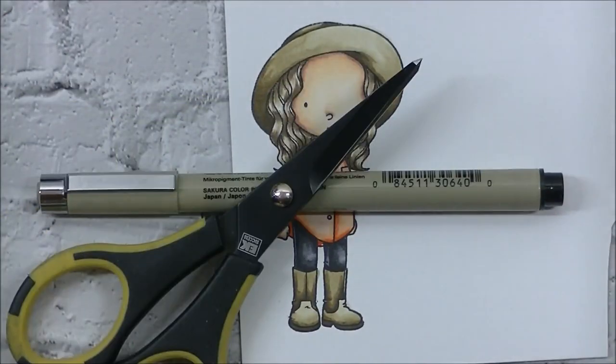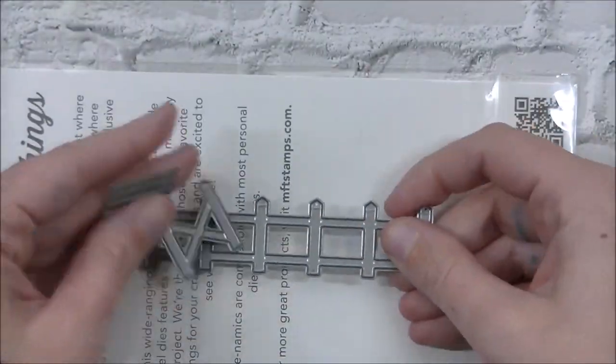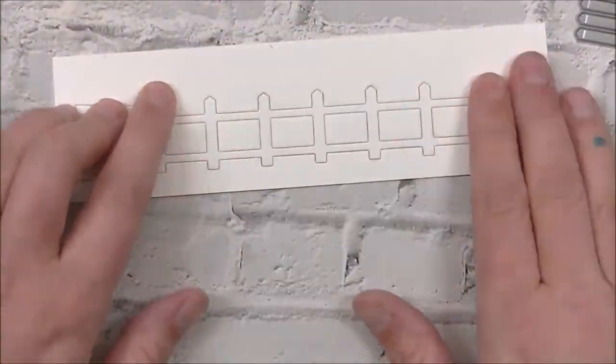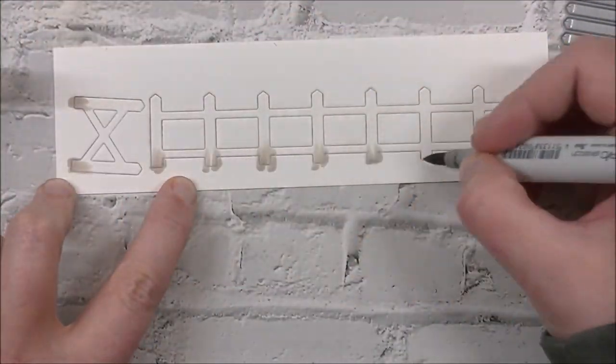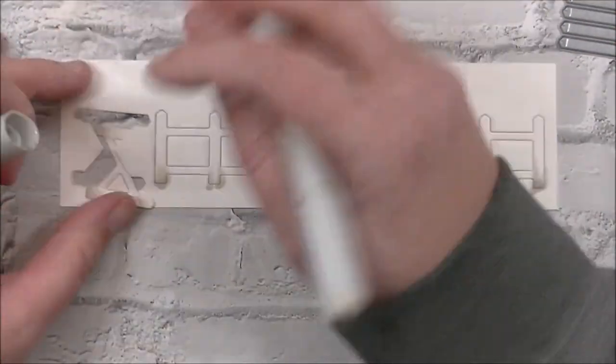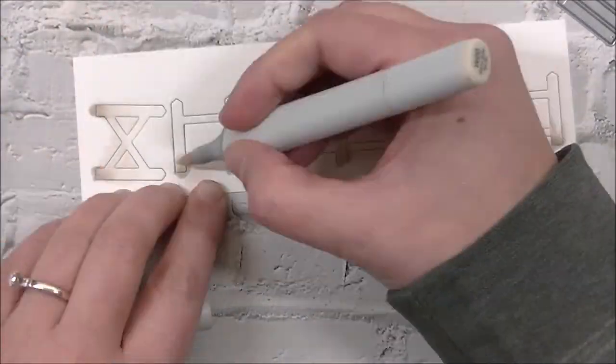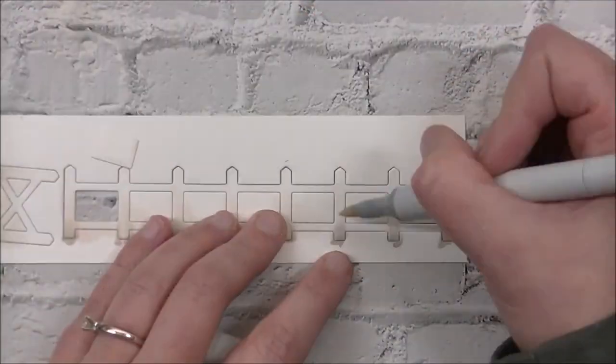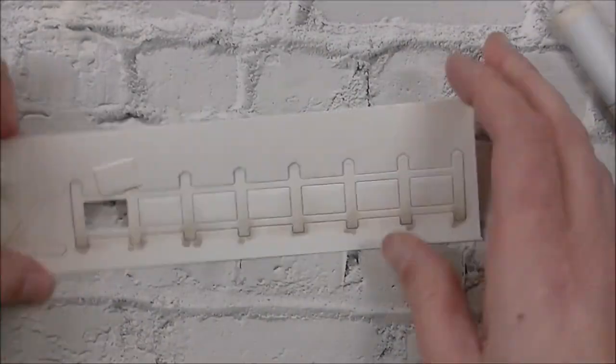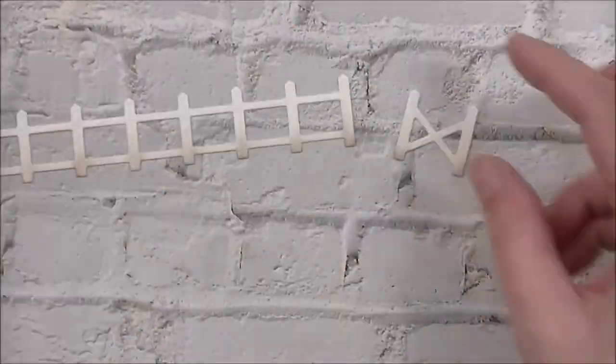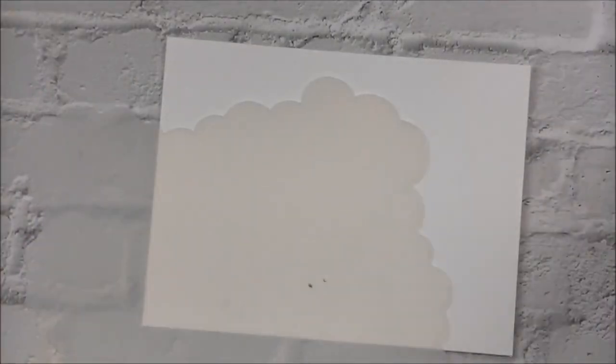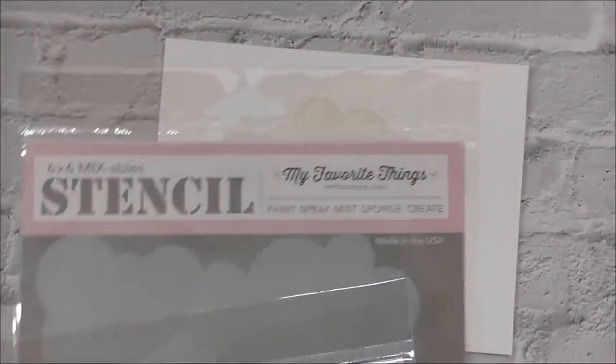Then I'm going to take my micron and outline it, and my scissors, and fussy cut her out. And there she is. Now I am going to pull out that fence die and die cut that out of the white paper. And again, color that up with the W1 and the W00 just to give it a little bit of life. I end up just using a small piece of the fence. I do really like the way it looks on the card itself.